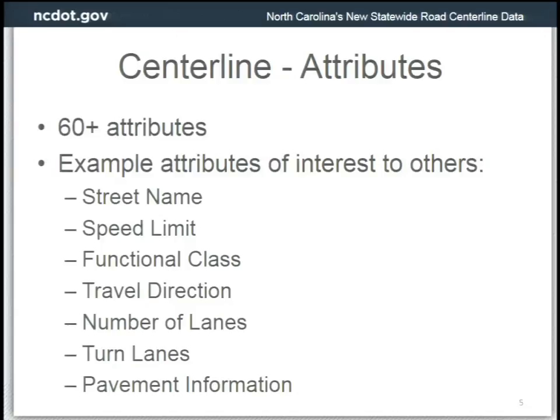We also maintain a whole bunch of attributes — right now there are over 60, and this number is growing as we start working with other attribute data owners. Some examples of attributes that people outside of a DOT might be interested in: street names, speed limits, functional class, travel direction, number of lanes, turn lanes, and pavement information. We have an entire data dictionary that you can download from our website, and we'll provide that URL at the end of the presentation.